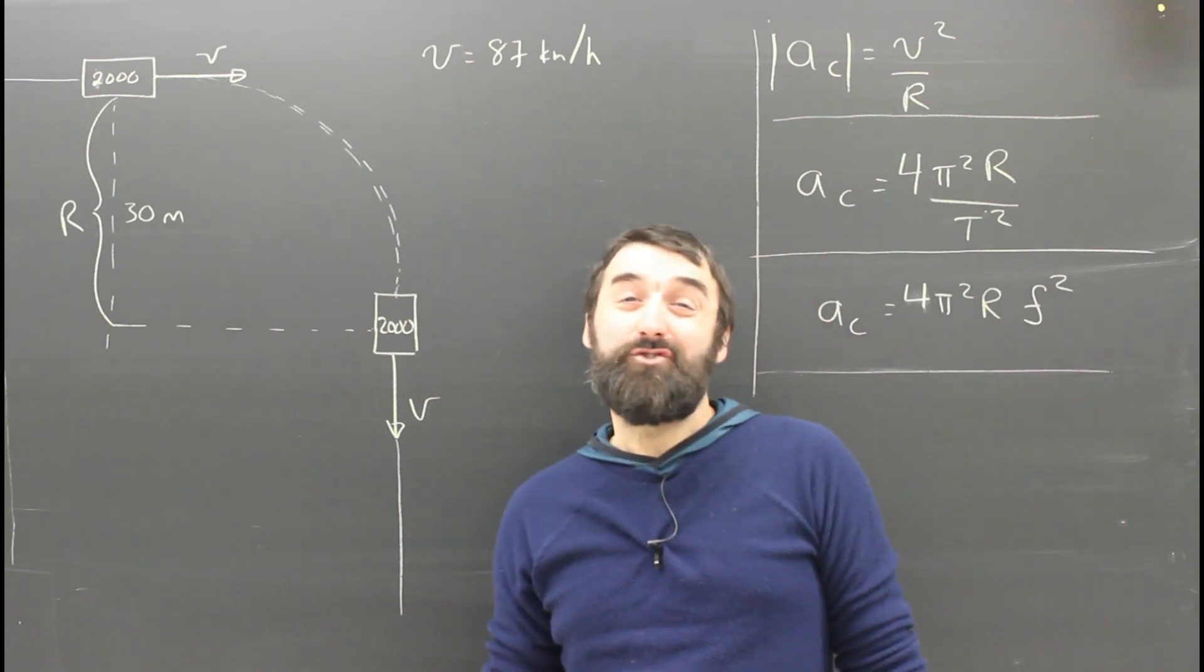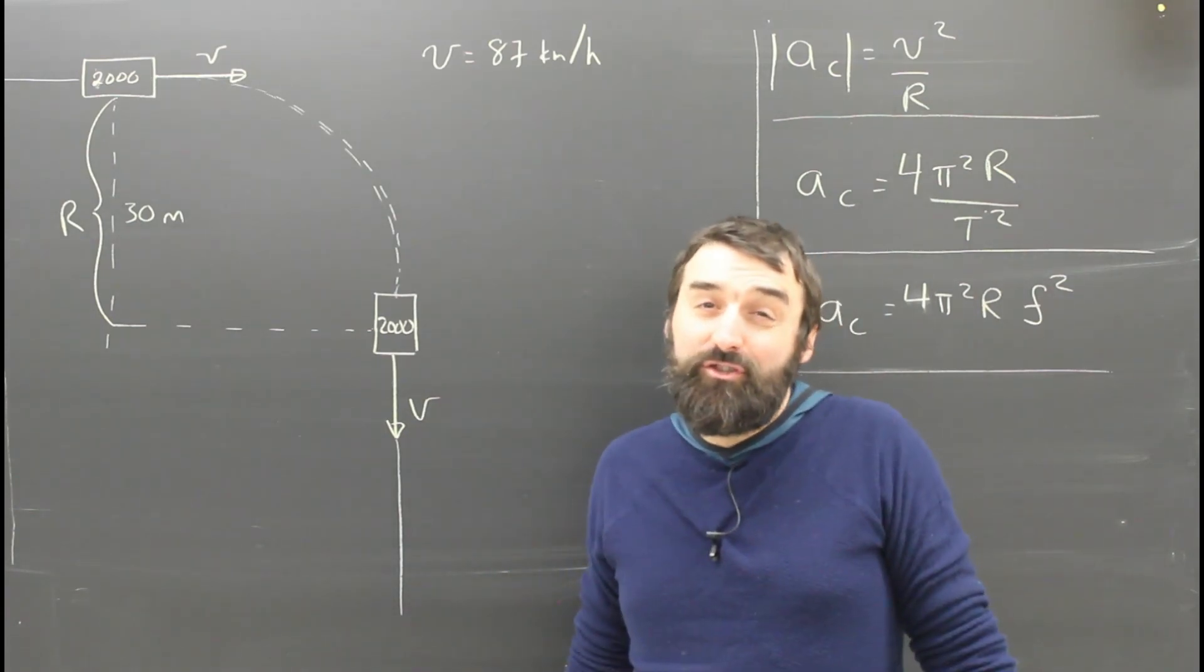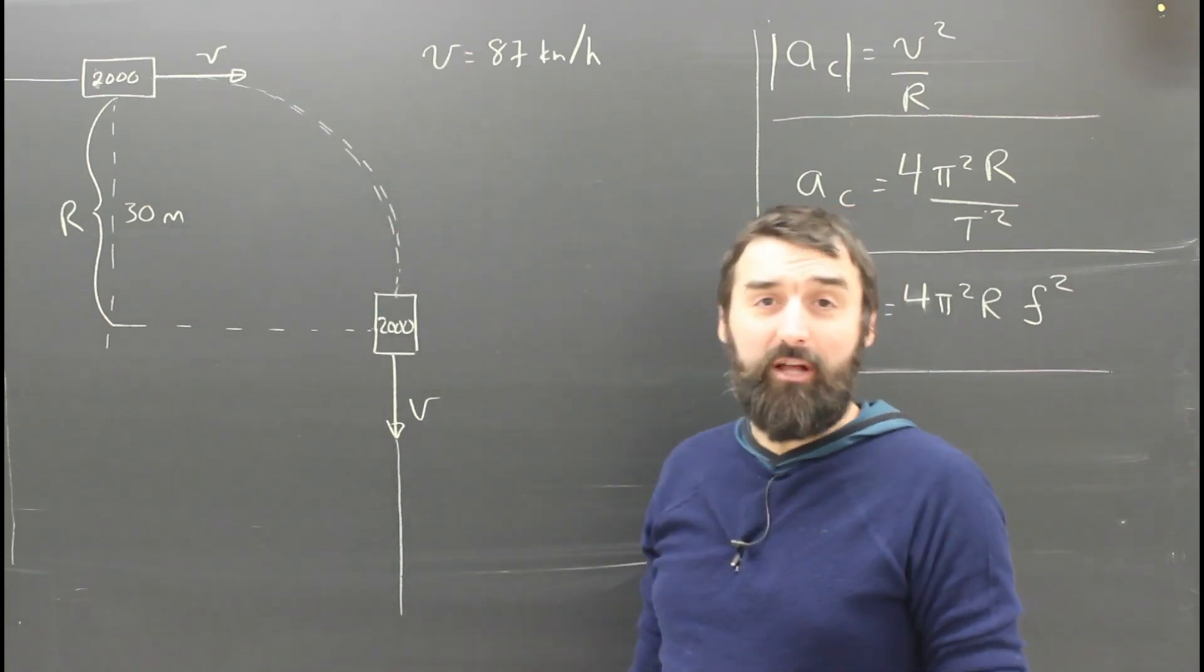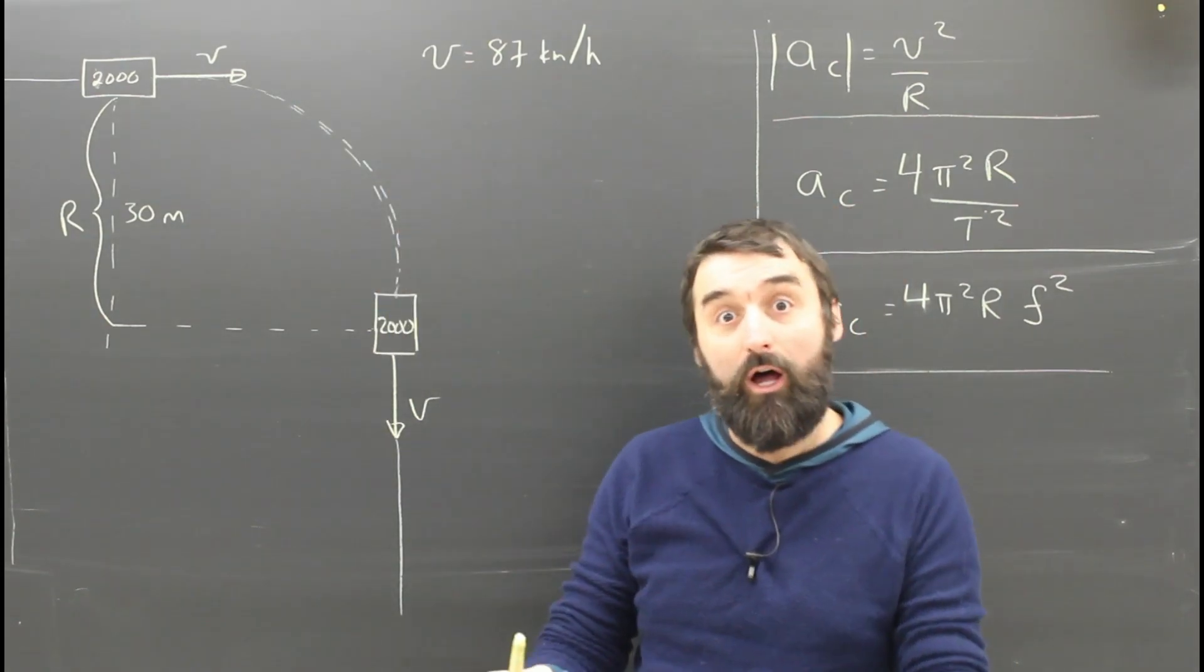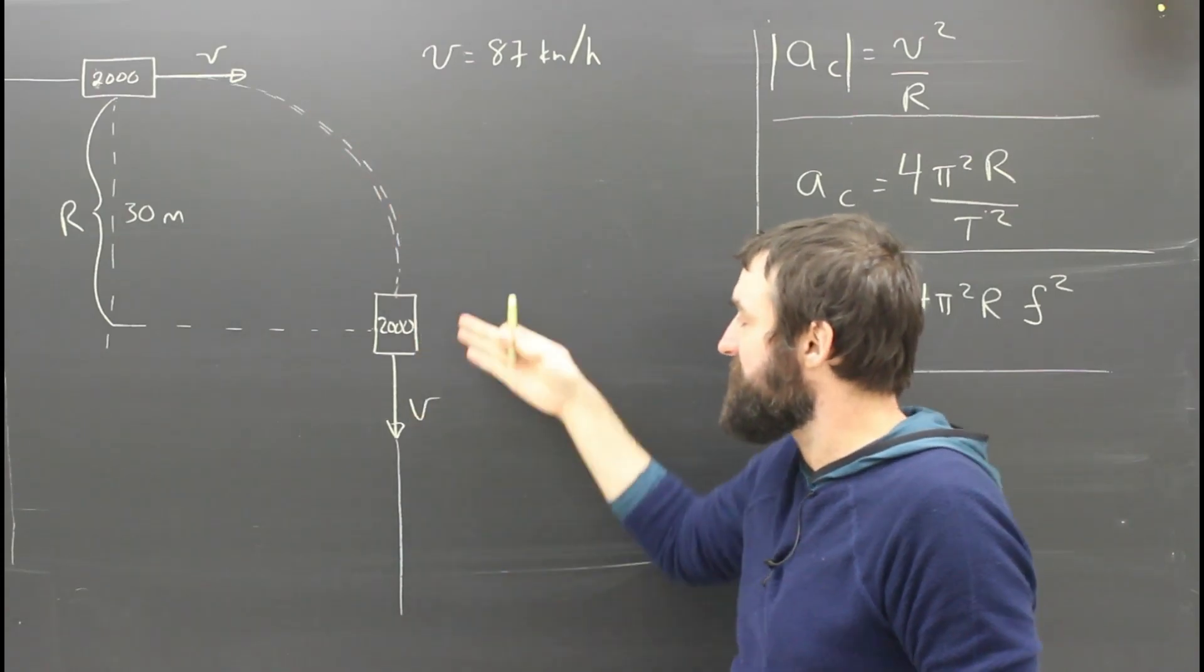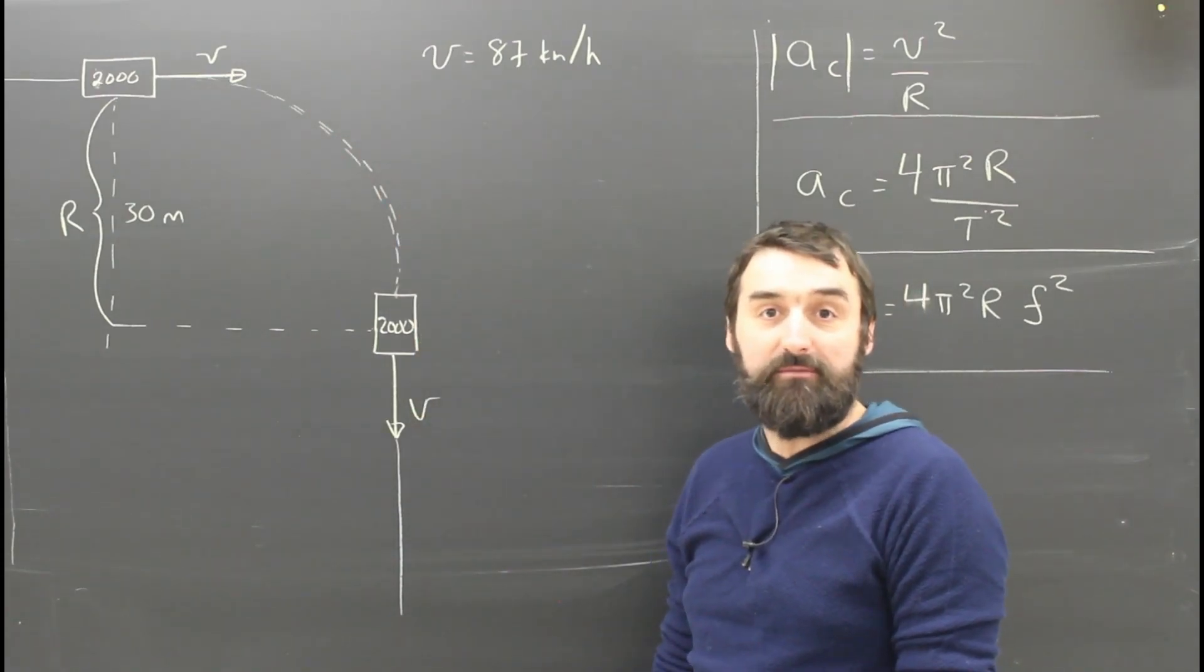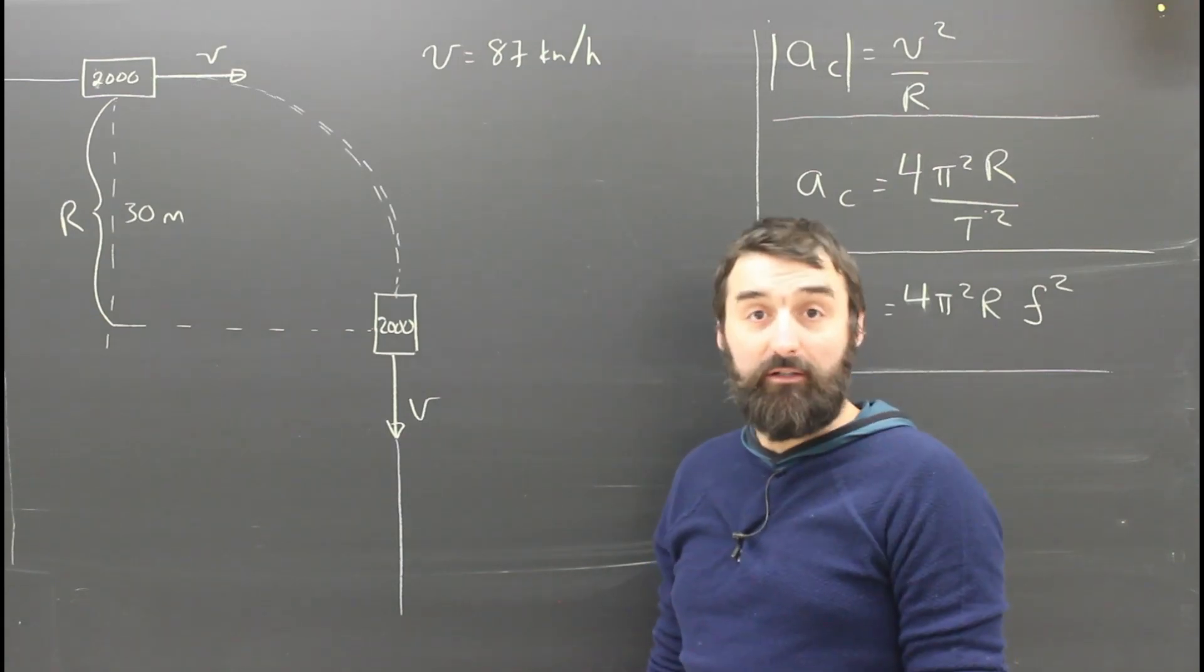So let's apply our understanding of centripetal acceleration of circular motion. This car is going east at a speed of 87 kilometers per hour with the cruise control on. It doesn't change speed. It turns 90 degrees so that it's heading south at the same speed, still 87 kilometers per hour. What is the car's acceleration?